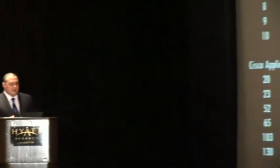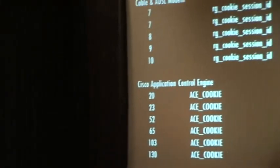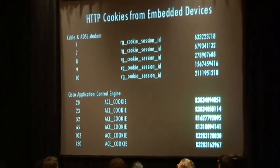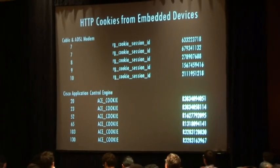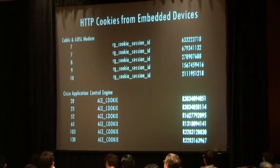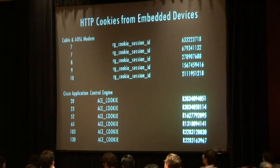Same thing applies to Cisco application control — ACE cookies that are supposed to be unique are obviously not. It's a great way to shake zero-days out of the internet: look for anything that's duplicate that shouldn't be a duplicate.